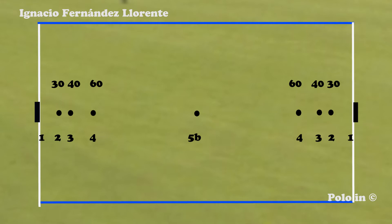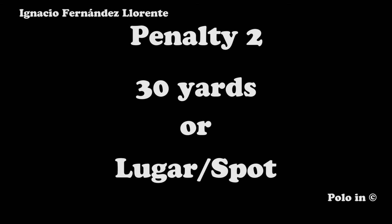Corner is Penalty 6 and it is executed from the 60 yards spot and in the spot where the ball went out. Penalty 2 can be executed from the exact place where the foul was done or from the 30-yard spot. Let's see some examples where they can choose to execute from the actual foul location.